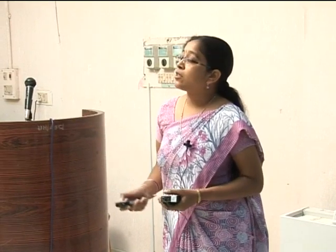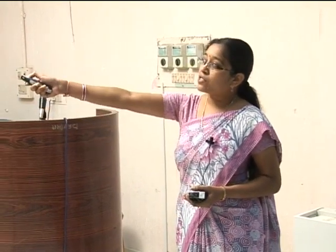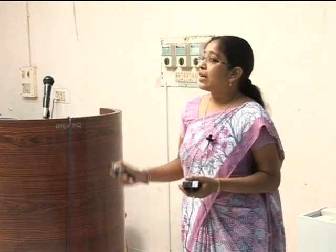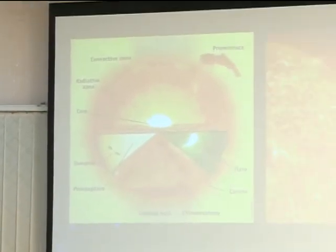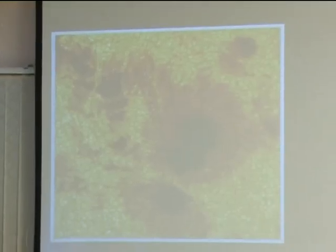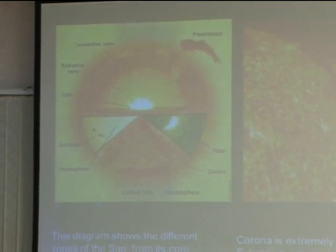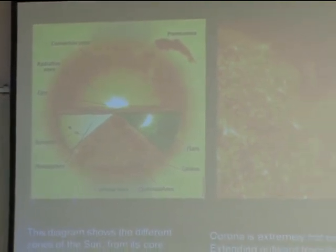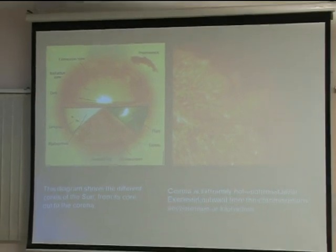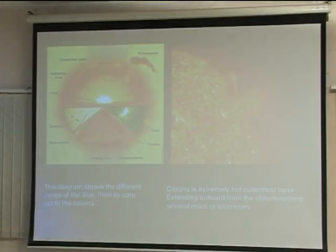Before going into detail, let us have an idea of the sun. If you see this picture, you can find the different parts of the sun. The sun is mainly divided into three parts: the convective zone, the radiative zone, and the corona. The corona is the extremely hot outermost layer coming out of the sun.